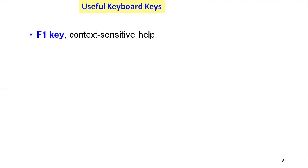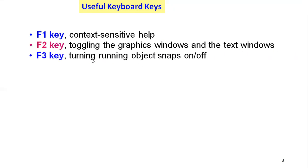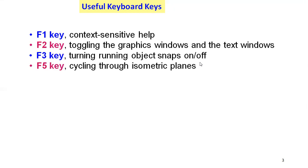The first key is F1 for context-sensitive help. Second is F2 for toggling between the graphics window and the text window. F3 is for turning the running object snap on and off. F5 key is for cycling through the isometric planes — you can rotate the isometric plane using the F5 key.